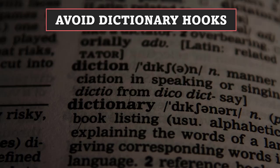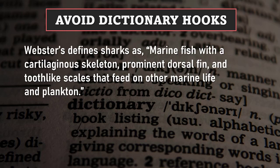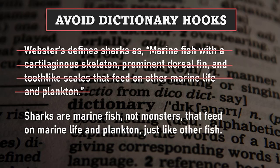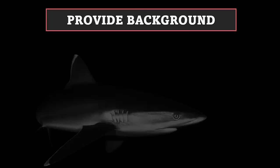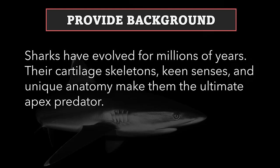Dictionary definitions can seem weak and should be avoided — for example: 'Webster's defines sharks as marine fish with cartilaginous skeleton, prominent dorsal fin, and tooth-like scales that feed on other marine life and plankton.' Original explanations keep you, the writer, in control: 'Sharks are marine fish, not monsters, that feed on marine life and plankton, just like other fish.' An introduction should also orient the audience by providing background context: 'Sharks have evolved for millions of years. Their cartilage skeletons, keen senses, and unique anatomy make them the ultimate apex predator.'